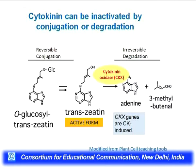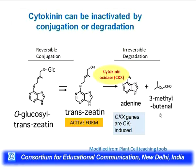In homeostasis, if the cell has too much cytokinin, plants can inactivate it by conjugating with glucose. The glucosyl-zeatin molecule is inactive, and it is a reversible process — when the cell needs more, it can be deconjugated and become active. Cytokinin can also be degraded: when cytokinin levels are high, an enzyme called cytokinin oxidase degrades cytokinin, producing the adenine base and a side-chain product.